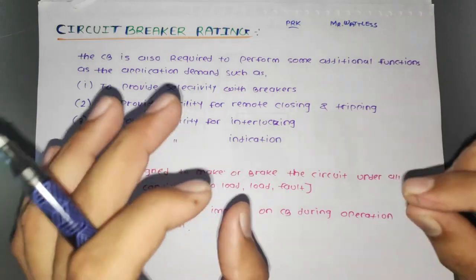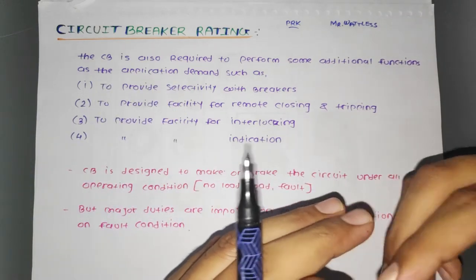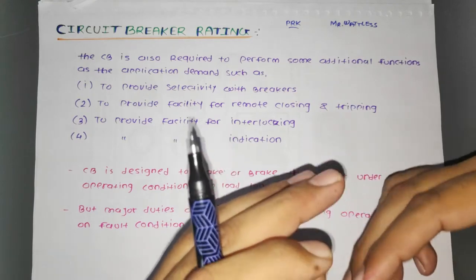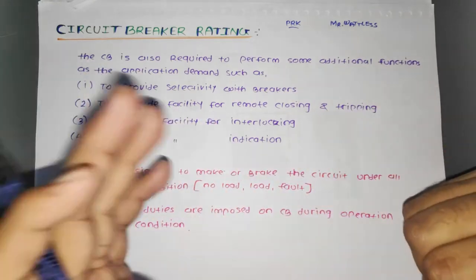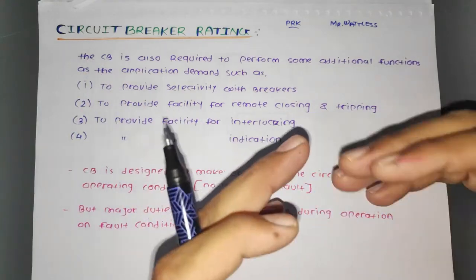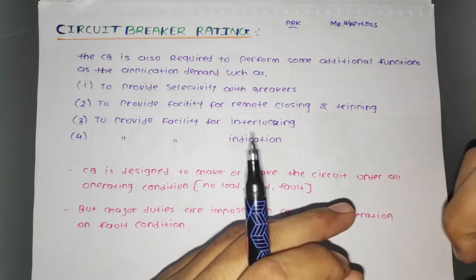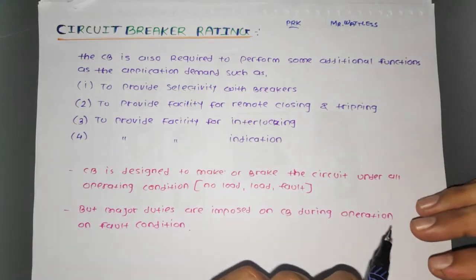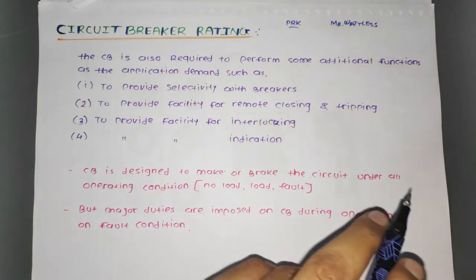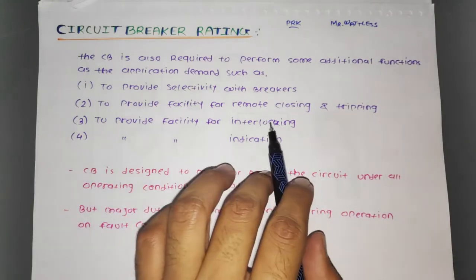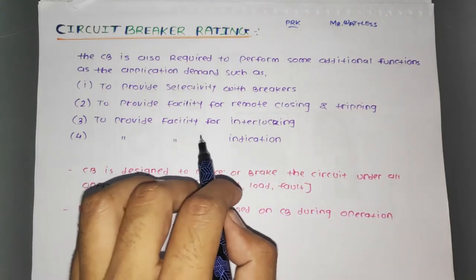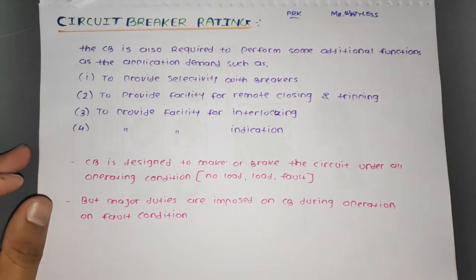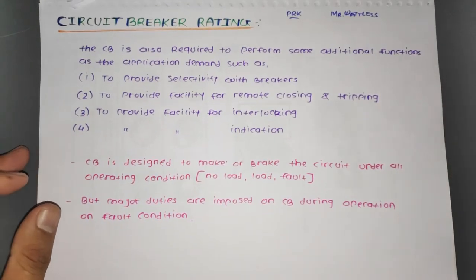The circuit breaker is also required to perform some additional functions as application demands. First, to provide selectivity with other breakers. Second, to provide facility for remote closing and tripping. Third, to provide facility for interlocking. And fourth, to provide facility for indication.